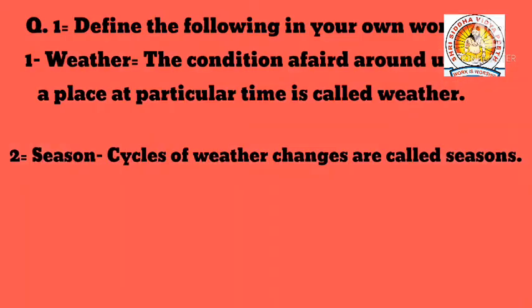Question number 1: Define the following in your own words. Weather: The condition of the air around us at a place at a particular time is called weather. Season: Cycles of weather changes are called seasons.